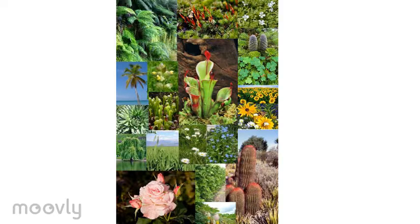The leaves take the water and nutrients and combine them with sunlight in a process known as photosynthesis to create food. The flowers create seeds for new plants to grow. And don't forget the most important thing that a plant does — it creates the air that we breathe.